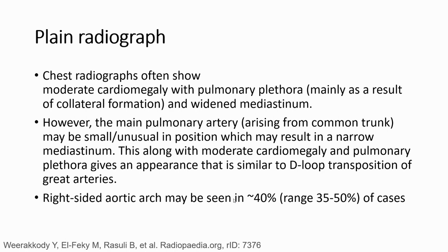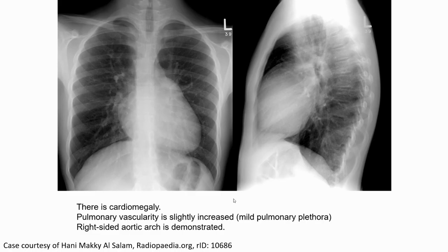Right-sided aortic arch may be seen in approximately 35% to 40% of cases. Here is an example of an image of truncus arteriosus. We can see cardiomegaly, with slightly increased pulmonary vascularity. Right-sided aortic arch is demonstrated.